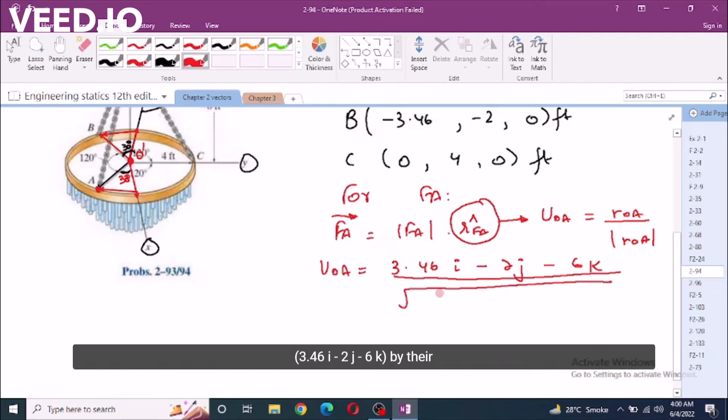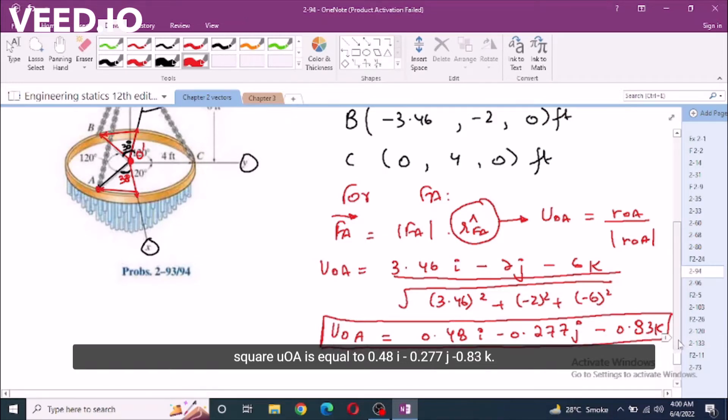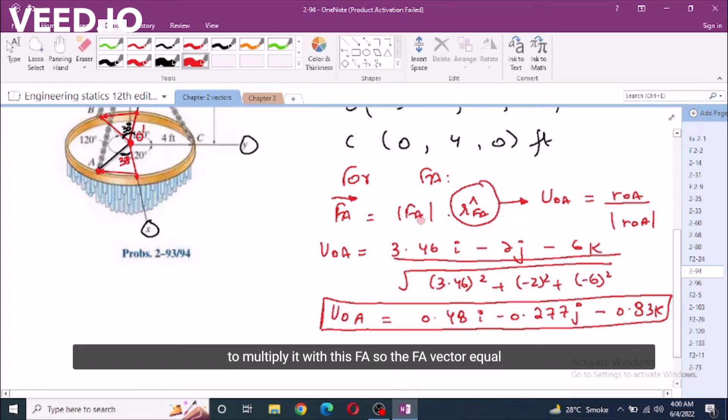We have 3.46i - 2j - 6k divided by its magnitude: square root of 3.46 squared plus negative 2 squared plus negative 6 squared. UOA is equal to 0.48i - 0.277j - 0.83k. Now for F in Cartesian vector form I'm going to multiply it by FA. So FA vector equals 0.48FA i - 0.277FA j - 0.83FA k.